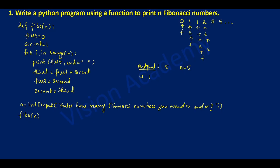Control transfers to the for loop again, incrementing i by one. Now i is two, which is less than four. It prints first — first value is one, so it prints one. Third equals first plus second: one plus two equals three, so three is third. First is equated to second, so second becomes first and third becomes second.